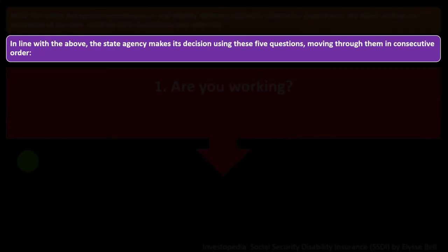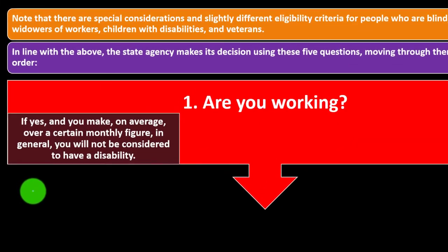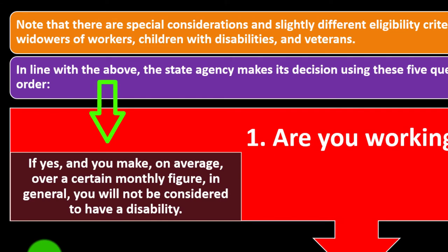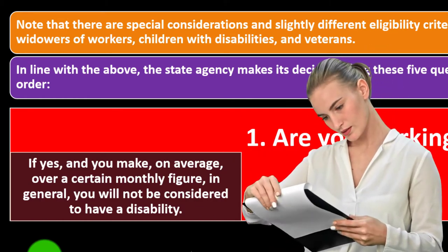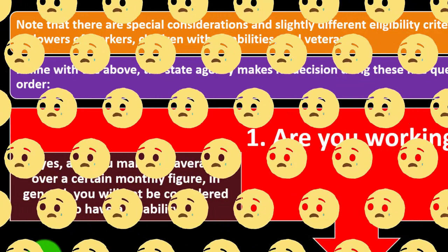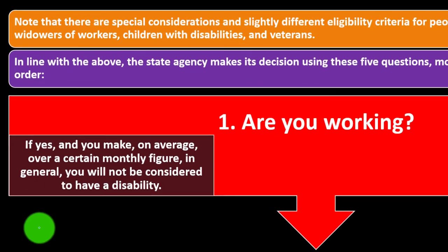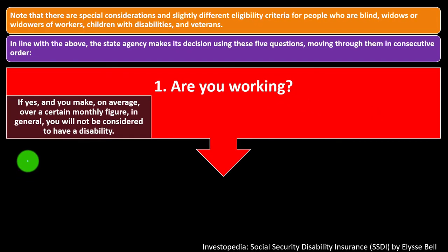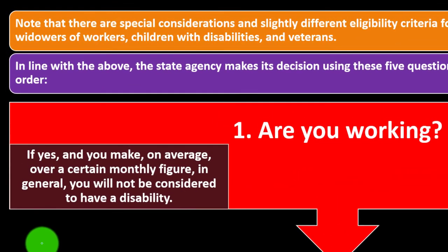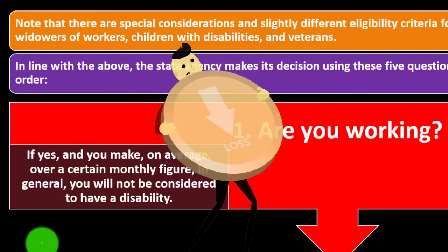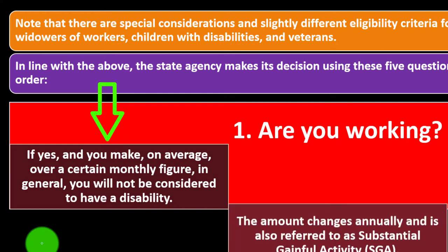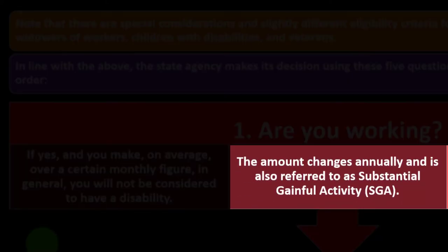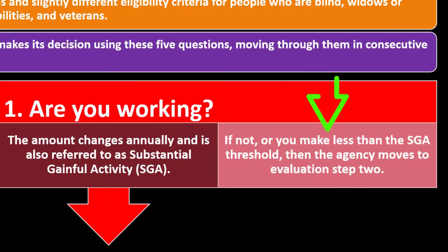The state agency evaluates applications using five consecutive questions. Step one: Are you working? If you earn on average over a certain monthly figure — the Substantial Gainful Activity threshold — you will not be considered to have a disability. This threshold changes annually. One challenge with these programs is that they can discourage earning above a certain level, since doing so may cause beneficiaries to lose their benefits.